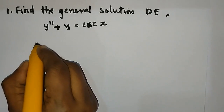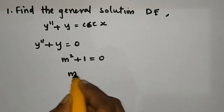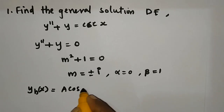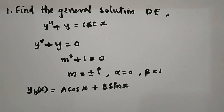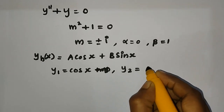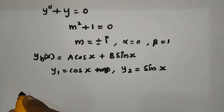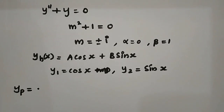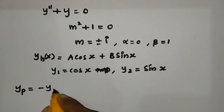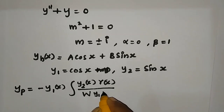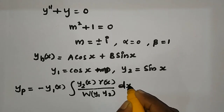Find the general solution of the differential equation y'' plus y equal to cos x. The homogeneous equation is y'' plus y equal to 0. The characteristic equation gives m equal to plus or minus i, so alpha equals 0 and beta equals 1. Then yh equals a·cos x plus b·sin x. With y1 equal to cos x and y2 equal to sin x, we use variation of parameters: yp equals y1·integral(y2·r(x) / W(y1,y2) dx) plus y2·integral(y1·r(x) / W(y1,y2) dx).